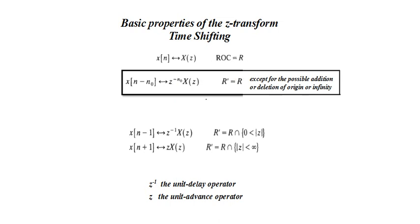Regarding the ROC, it is exactly the same except for the possible addition or deletion of the origin or infinity. Sometimes we need to avoid Z equal to 0, and in some cases we need to avoid Z equal to infinity. In some problems we need to add Z equal to 0, and in some cases we need to avoid it. I will explain it when we do the problems.